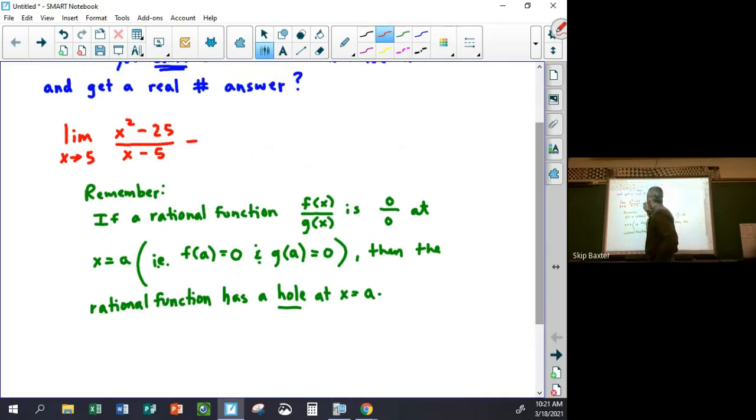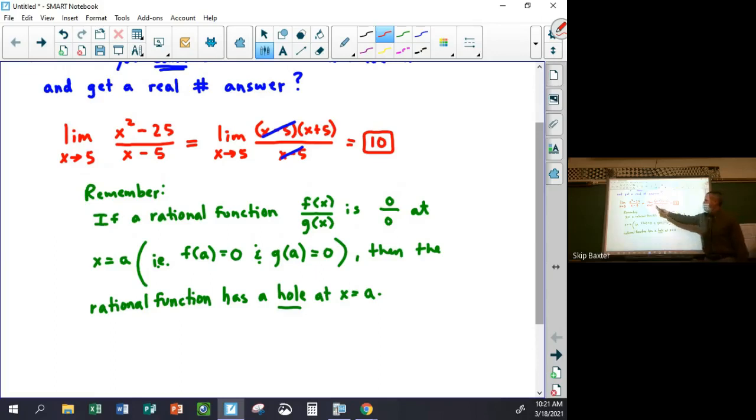This is just equal to the limit as x goes to 5 of, I can factor the top, x minus 5 times x plus 5, and I can factor the bottom, x minus 5, like that. I can then cancel the common factor, and then just substitute 5 in, and I get 10. If I substitute 5 into this function, I get 10. So this original function actually looks exactly like this line, y equals x plus 5, except there's a hole at 5.